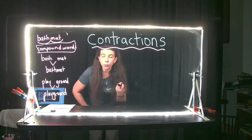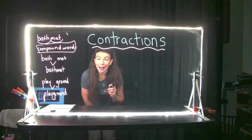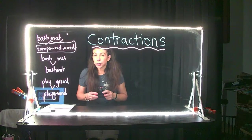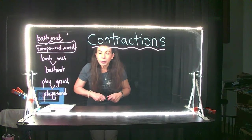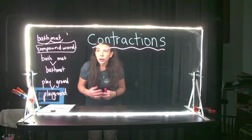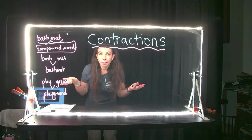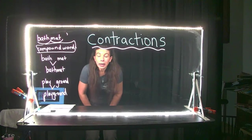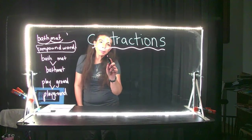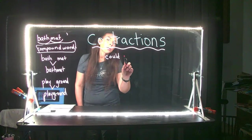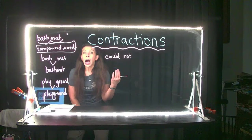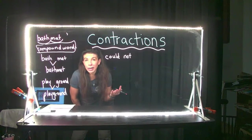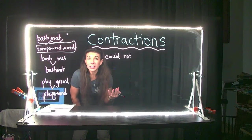Today we're going to focus on making contractions with the word 'not' and with the word 'is.' We use contractions all the time — not so much when we write, but when we speak. For example, if I was going to tell you I couldn't do something: 'I couldn't go outside to play because it was raining.' Couldn't means 'could not.' I probably wouldn't say 'I could not go outside'; I would say 'I couldn't go outside.'